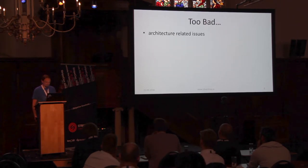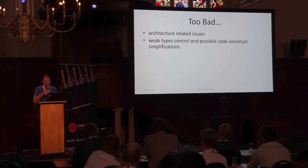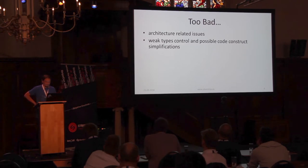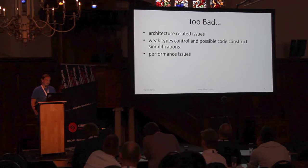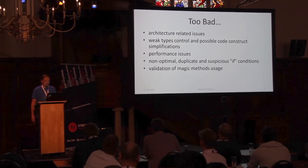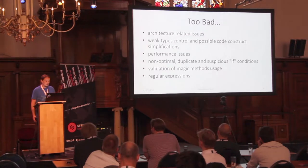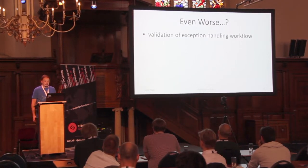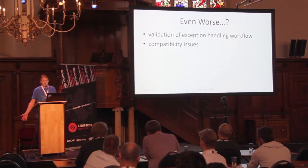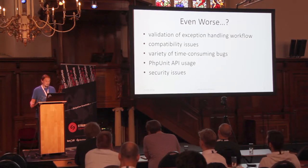So what does it check? It checks architecture-related issues, weak type controls like using double equals, and possible code construct simplifications. It checks for performance issues, weird if conditions, validations of magic methods — which we also use in SilverStripe — it can check your regular expressions, validate the exception workflow, compatibility issues, a variety of time-consuming bugs, stuff with PHPUnit, and of course security issues.